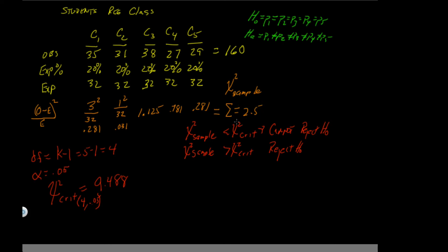Our sample value was 2.5 and the critical value is 9.488, so 2.5 is less than 9.488. Therefore, since the sample is less than the critical value, we cannot reject the null hypothesis. This means the observed values are within statistical averages — they are close enough to the expected value that they are all statistically the same.